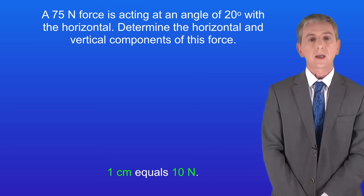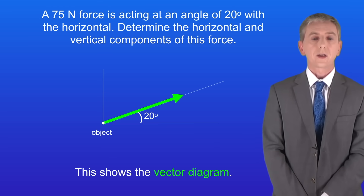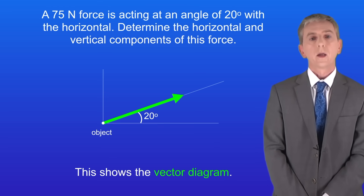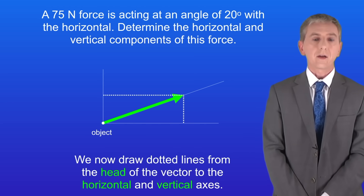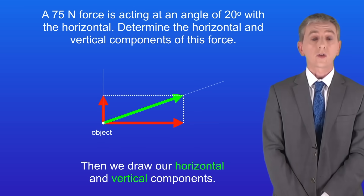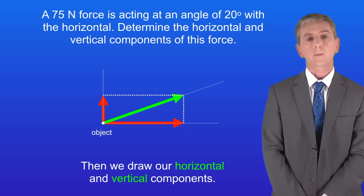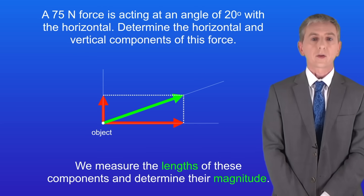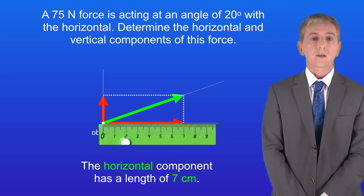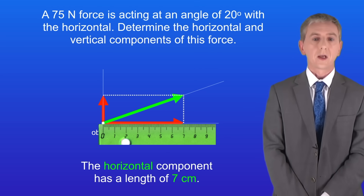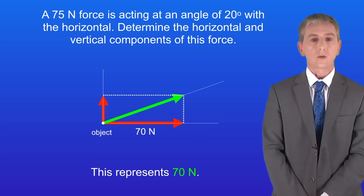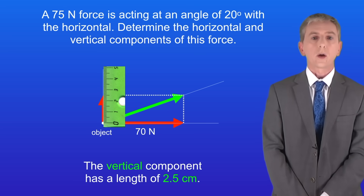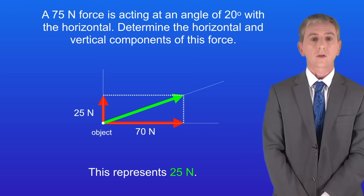Okay, I'm using a scale of one centimeter equals 10 newtons. Here's the vector diagram. We now draw dotted lines from the head of the vector to the horizontal and vertical axes, and then we draw horizontal and vertical components. Finally we measure the lengths of these components and determine the magnitude. The horizontal component has a length of 7 centimeters so this represents 70 newtons, and the vertical component has a length of 2.5 centimeters so this represents 25 newtons.